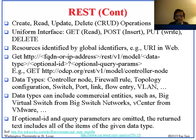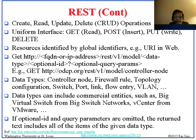Everything is a URI, so if you wanted to reach, let's say, a controller, that's one in the fourth line here — GET http://odcp.org, which we call FQDN, fully qualified domain name, followed by the directory REST, followed by the sub-directory, and so on and so forth, all the various controller nodes. That basically is the controller, and it appears like a page to everyone.